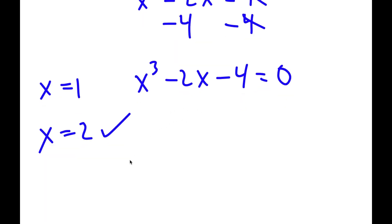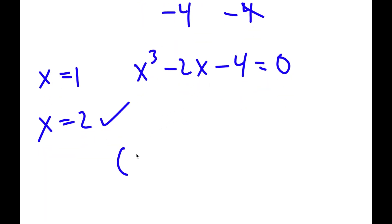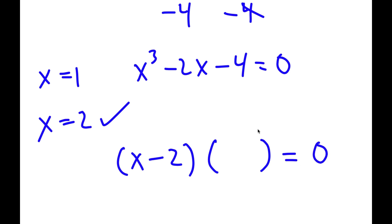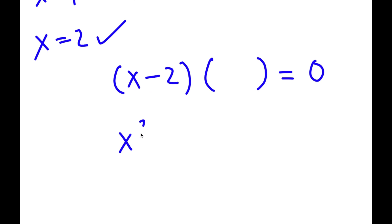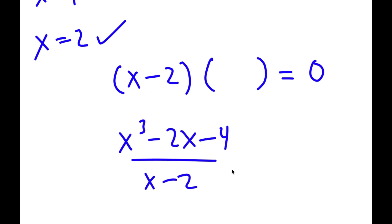Now that I know x equals 2 is a solution, this means x minus 2 is going to be a factor. So I have x minus 2 times something equals 0, meaning if I divide x cubed minus 2x minus 4 by x minus 2, I should get that other factor.